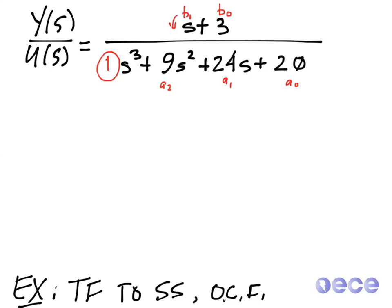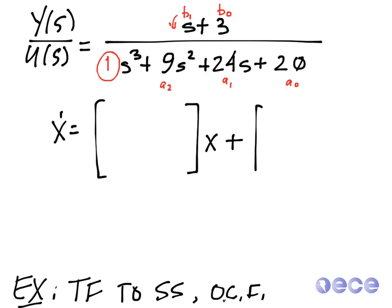So I can go ahead and write down my observable canonical form. x-dot equals the A matrix times x, plus the B matrix times u, and y is going to be equal to some C times x.